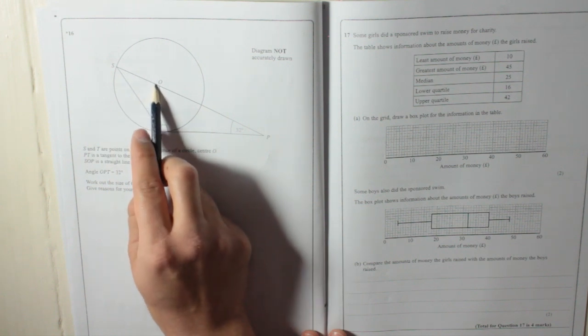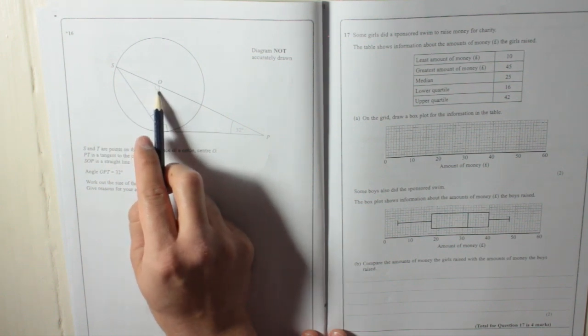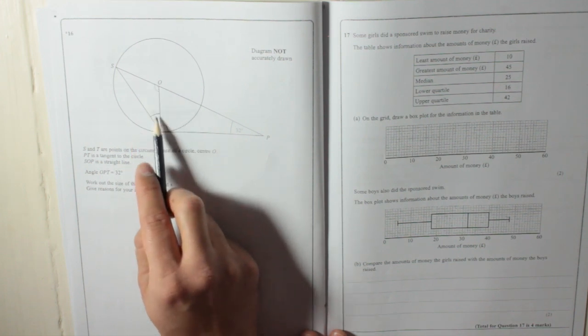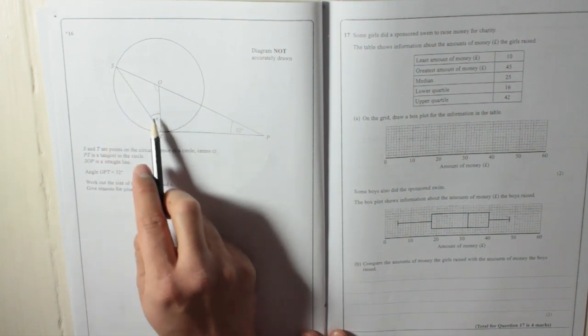Now if I know this angle here, then when you take that from 180, what's left will be these two. So divide it by two, we'll find that one.